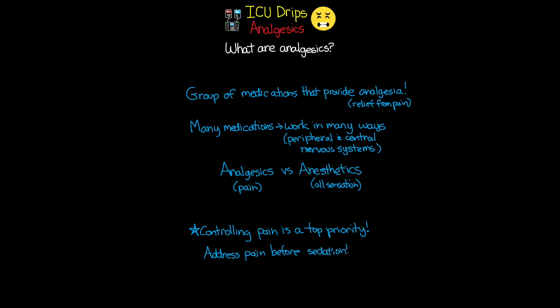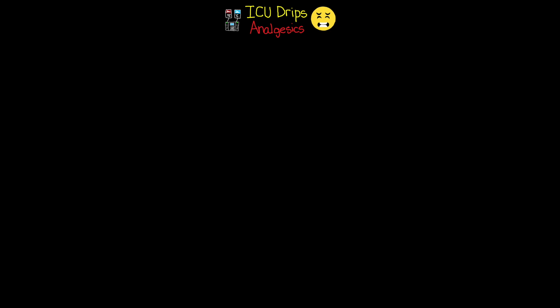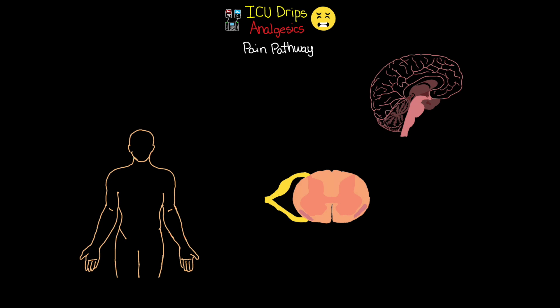These are medications that play a very important role in ICU patient care. The next thing I want to discuss is the pain pathway — some pathophysiology to help you understand how we go from an injury and stimulation to our perception of pain. Within this pain pathway we have two different pathways: the ascending pathway and the descending pathway.